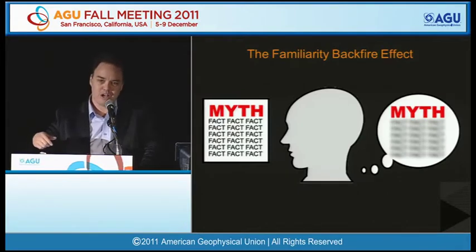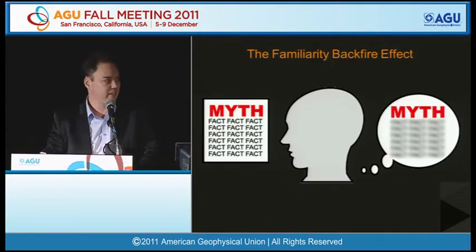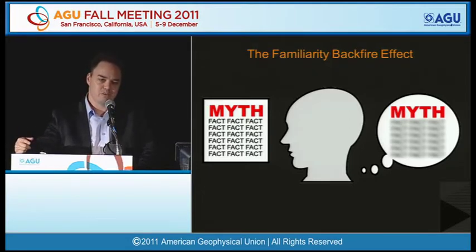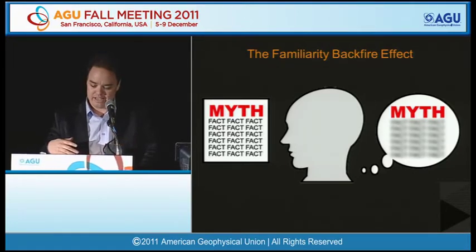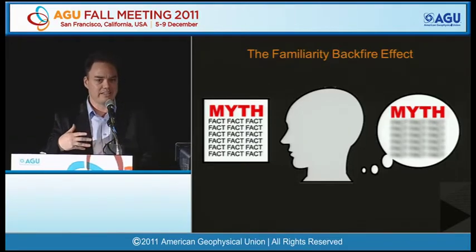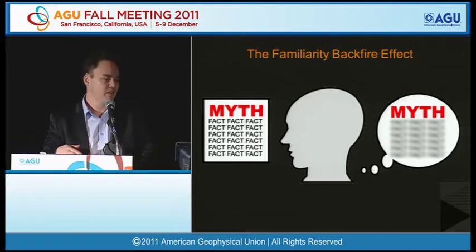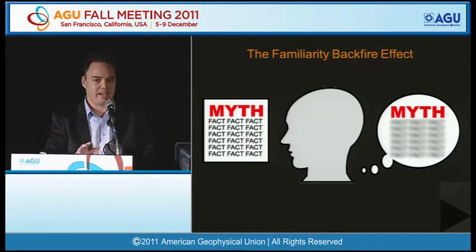The driving force behind this familiarity backfire effect is that the more familiar people become with information, the more likely they are to accept it as true. When people first read the flyer they remembered all the details about the debunking and scored pretty well if tested straight after. But after a bit of time had elapsed the details started to fade and all they remembered was the myth.